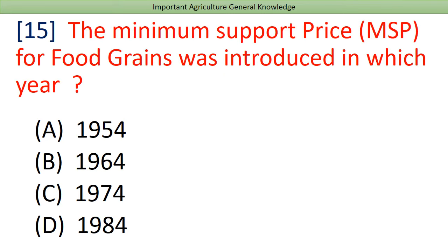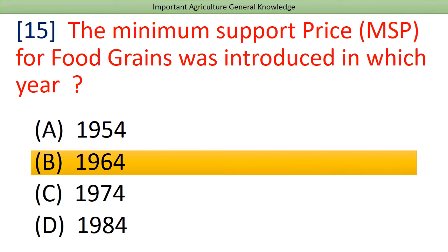The Minimum Support Price (MSP) for food grain was introduced in which year? Answer: 1964.